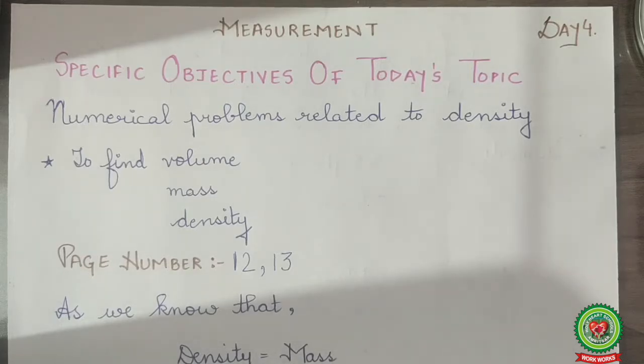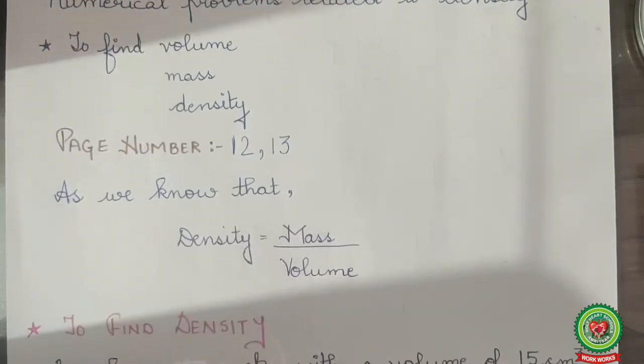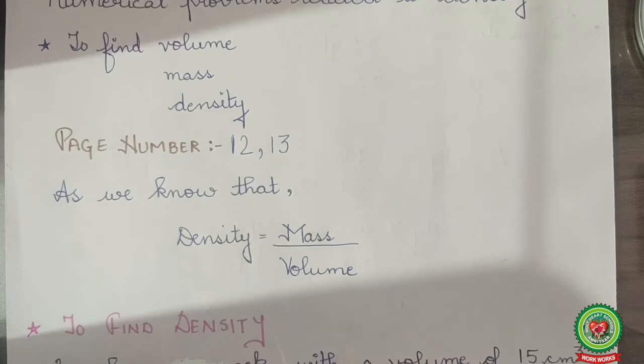Students, in previous lectures, we have discussed what is the measurement of area, measurement of volume and measurement of density. Now from measurement of density, we have come up with this formula that density is equals to mass upon volume.